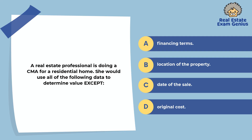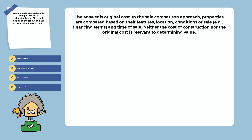A real estate professional is doing a CMA for a residential home. She would use all of the following data to determine value except: financing terms, location of the property, date of the sale, or original cost. The answer is the original cost. In the sales comparison approach, properties are compared based on their features, location, conditions of sale, and time of sale. Neither the cost of construction nor the original cost is relevant to determining value.